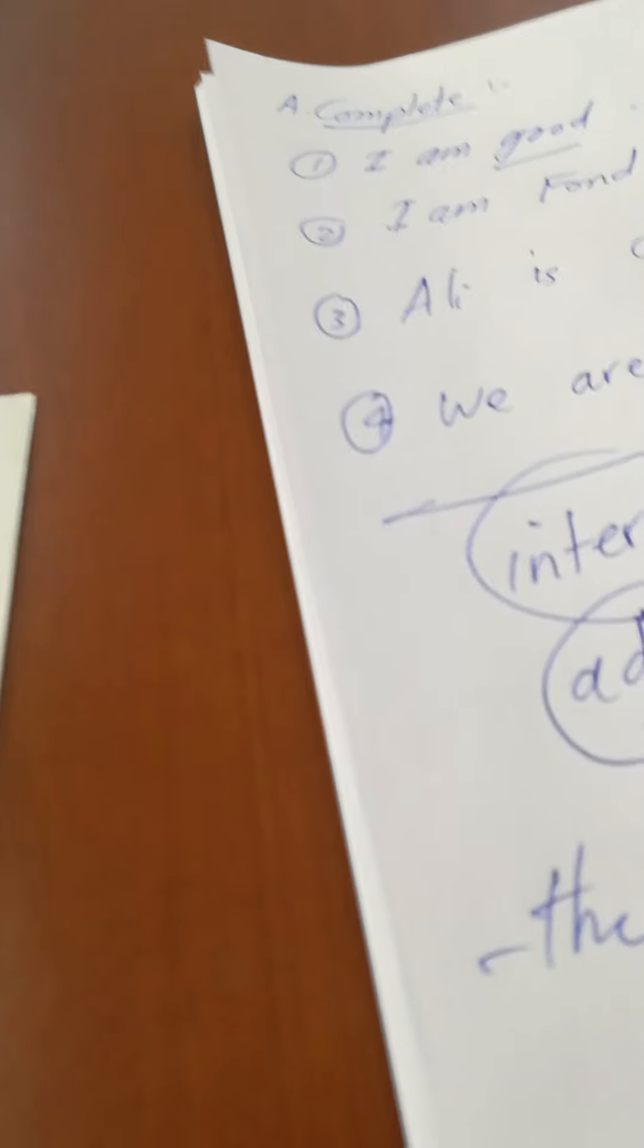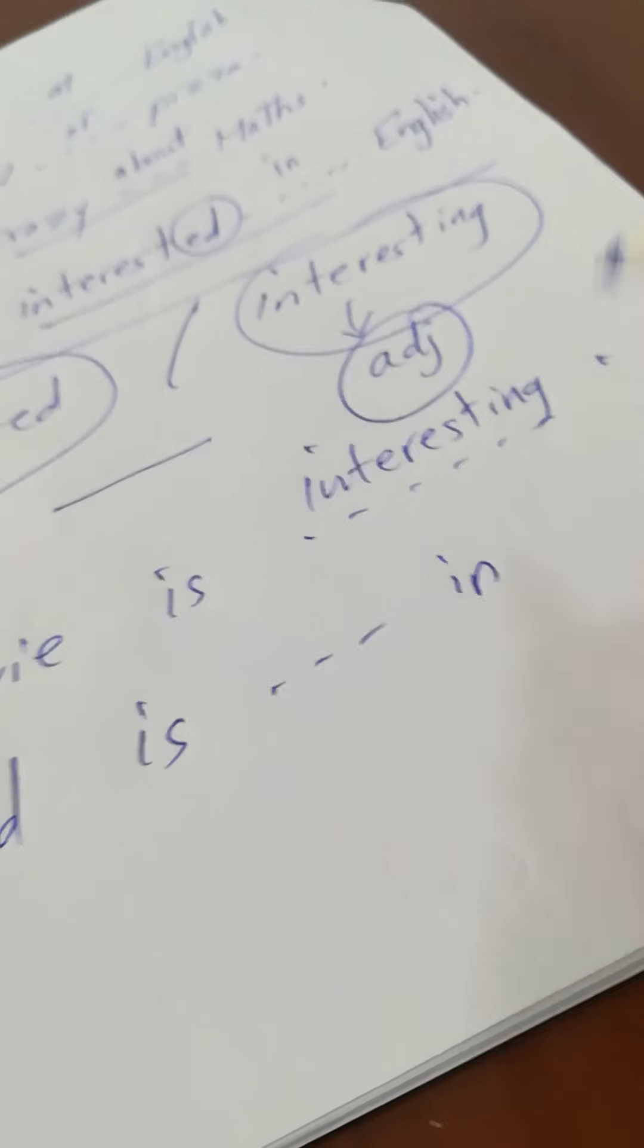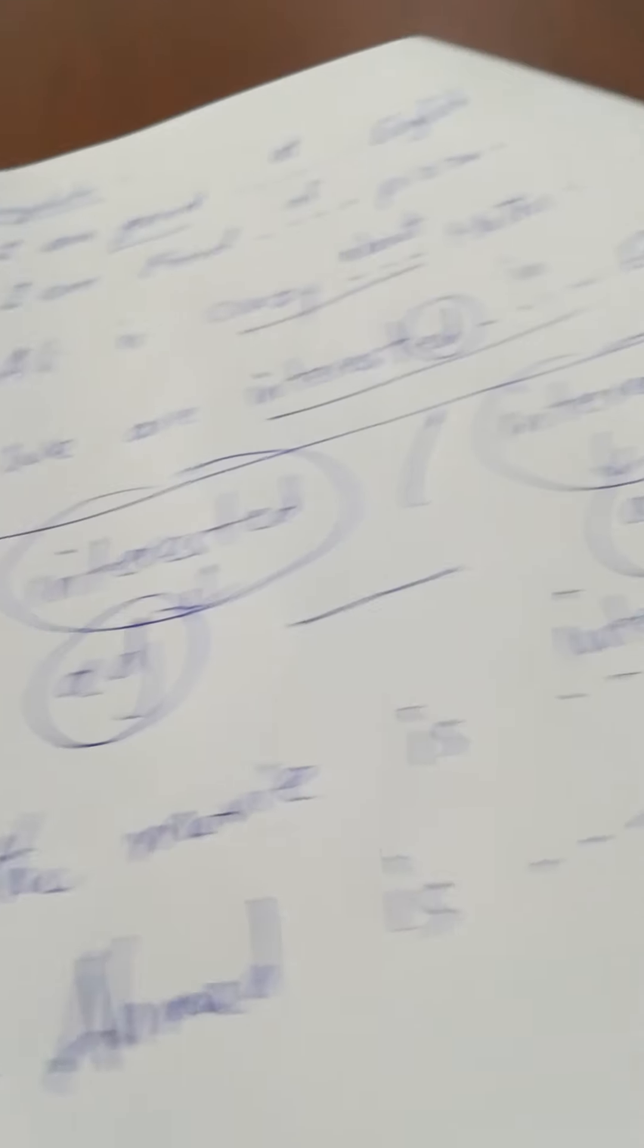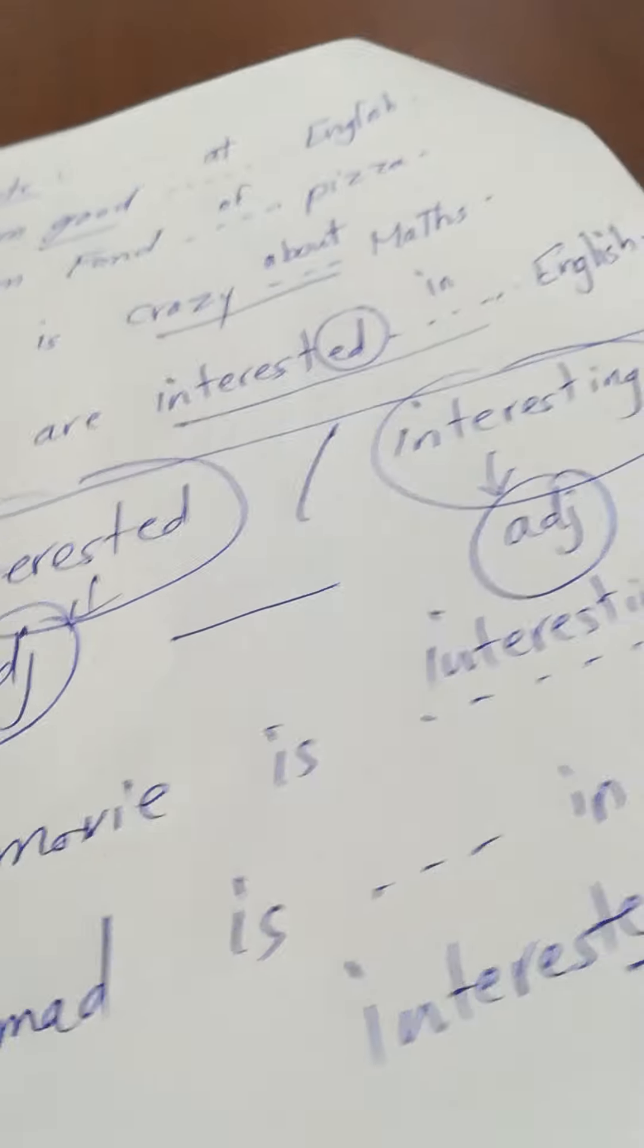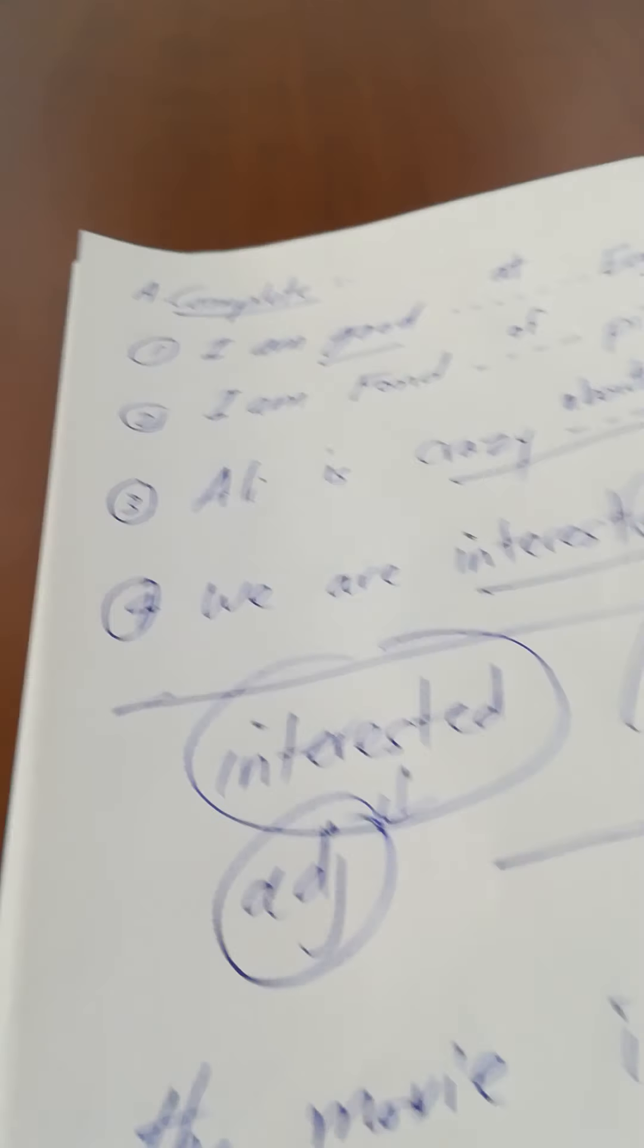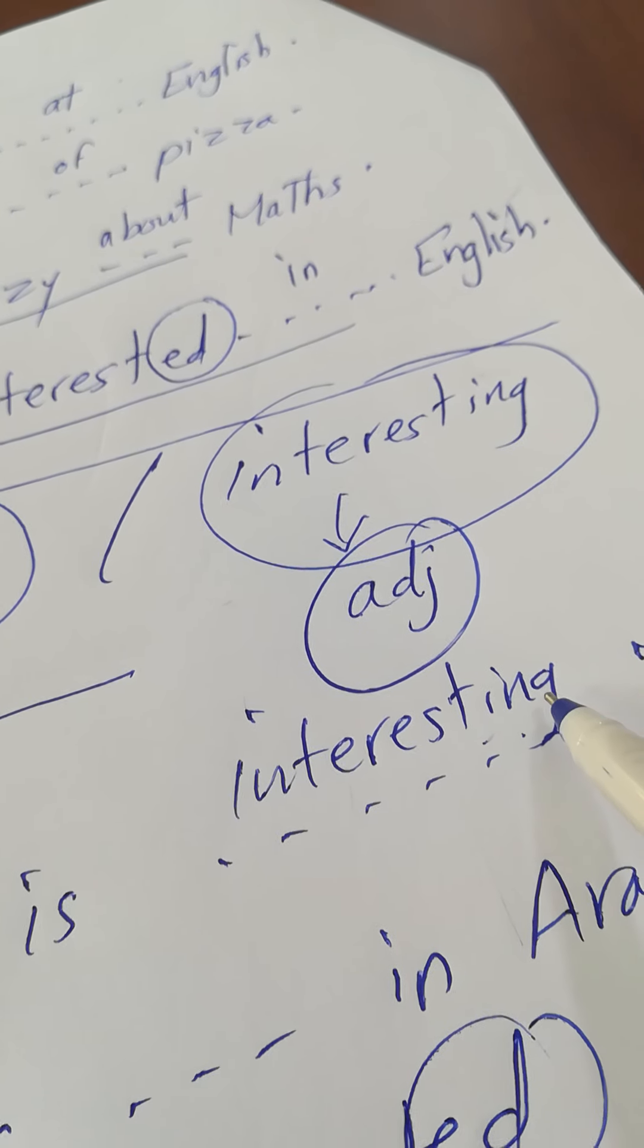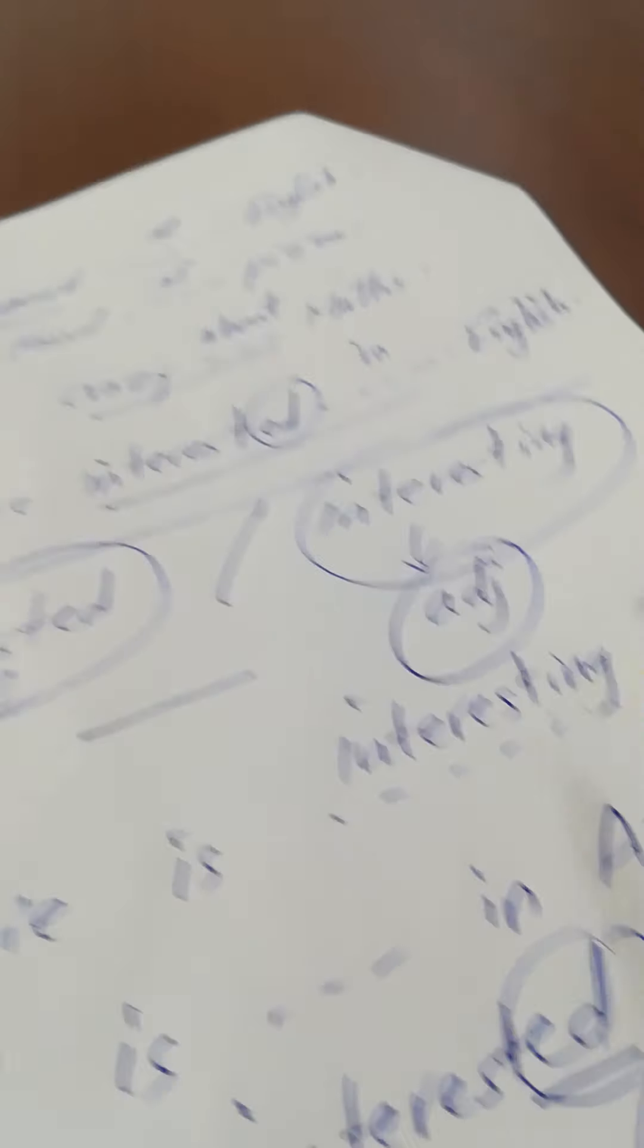Ahmed is space in Arabic, what is the right adjective here? I say interested, interested A-D, adjective ending with A-D. Adjective ending with A-D with people. But when I say I-N-G, with things or situations, I-N-G with things or situations in English.